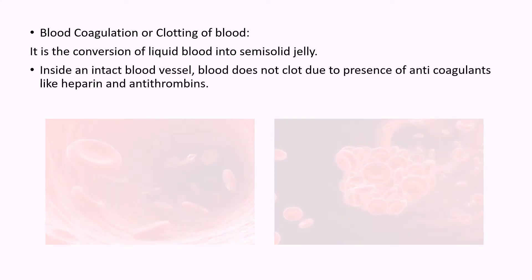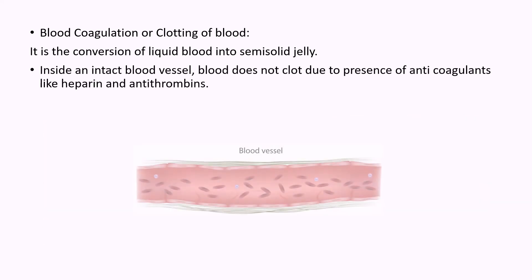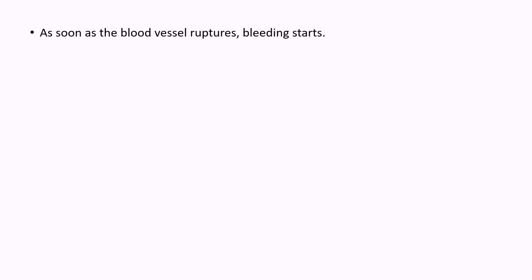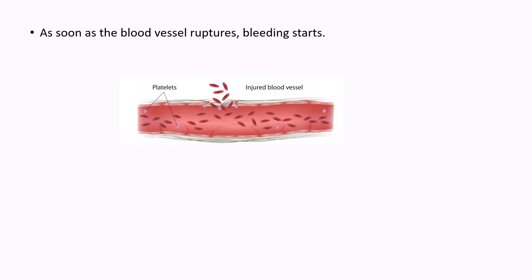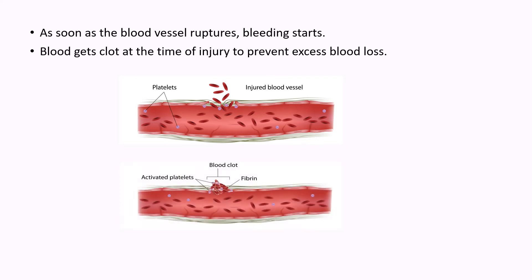While the blood vessel is intact, blood does not clot inside the blood vessel, due to presence of anticoagulants like heparin and antithrombins. But as soon as the blood vessel ruptures, bleeding starts. As the bleeding starts, the blood starts getting coagulated to prevent excess blood loss.